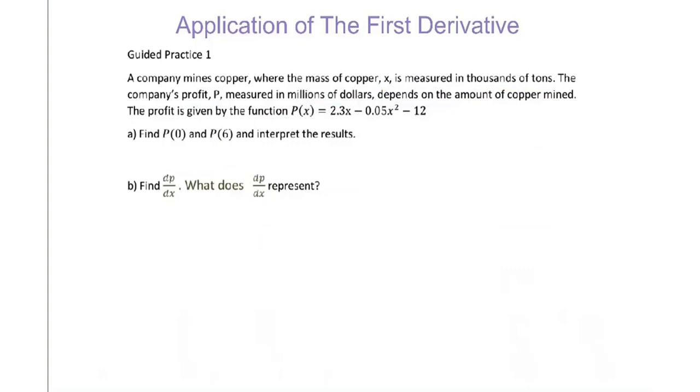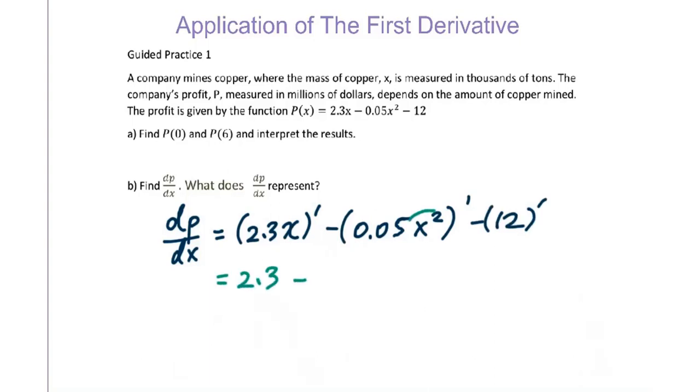Now for part b, find dP/dx. dP/dx equals the derivative of 2.3x minus the derivative of 0.05x² minus the derivative of 12. So we have 2.3 minus, drop down minus 1, you will get 0.1x.